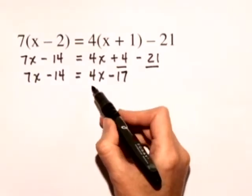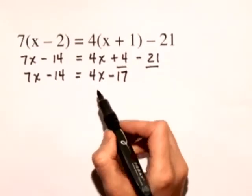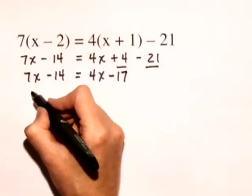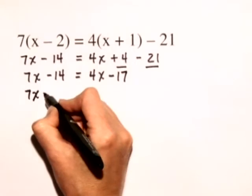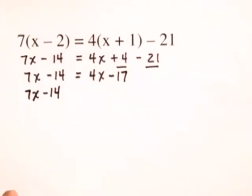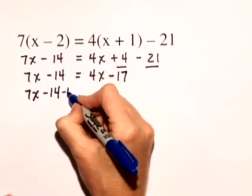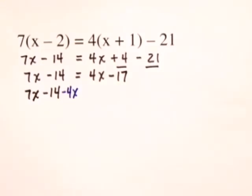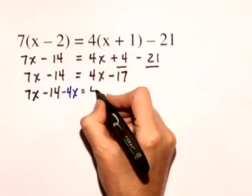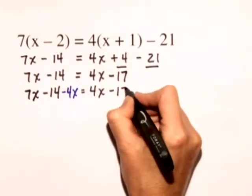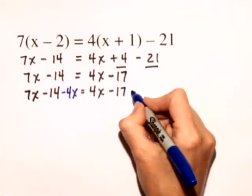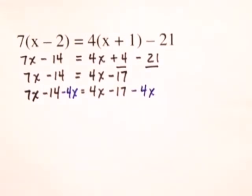Let's put the x terms on the left hand side, so we'll do that by subtracting 4x from both sides. We have 7x minus 14 minus 4x is equal to 4x minus 17 again minus 4x.